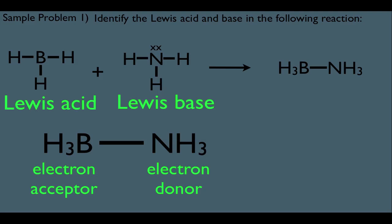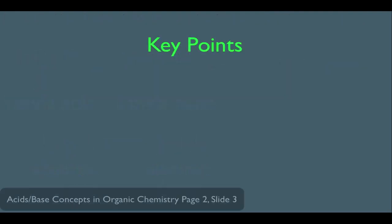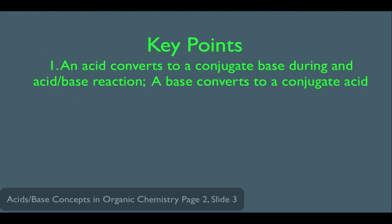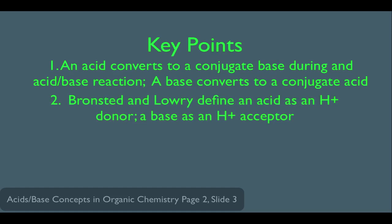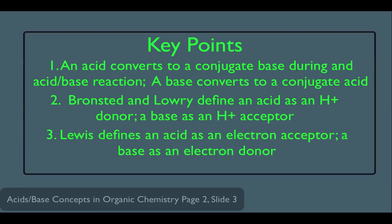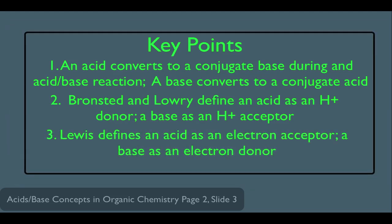Let's go over our key points. Number one: an acid converts to a conjugate base during an acid-base reaction, and a base converts to its conjugate acid. Number two: Bronsted and Lowry define an acid as an H-plus donor and a base as an H-plus acceptor. And finally, the Lewis definition: Lewis defines an acid as an electron acceptor and a base as an electron donor.